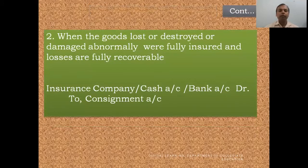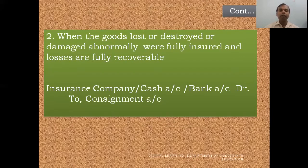When the goods lost or destroyed or damaged abnormally were fully insured and losses are fully recoverable, the insurance company gives full compensation. We pass the entry: Insurance Company Account debit to Consignment Account if the amount is due, or Cash/Bank Account debit to Consignment Account if compensation has already been received.